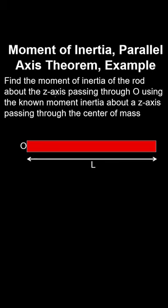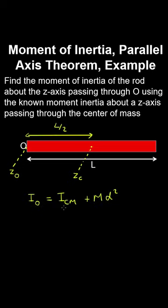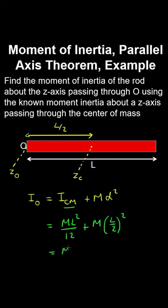Let's find the moment of inertia of a rod about the z axis through point O, using the known moment of inertia about the z axis through the centre of mass, which is ML²/12. Since these axes are parallel, we apply the parallel axis theorem, adding M times (L/2)² to the centre-of-mass moment. Evaluating gives ML²/3.